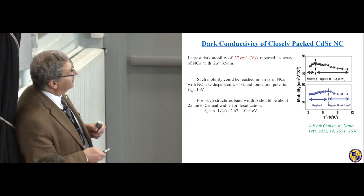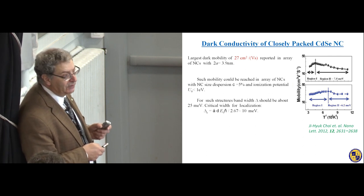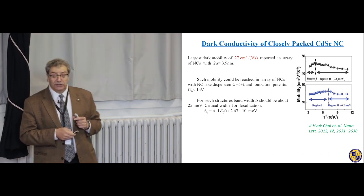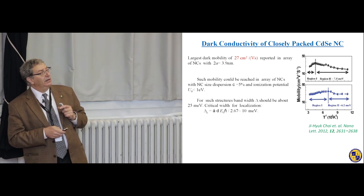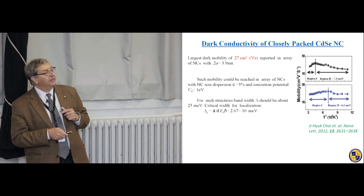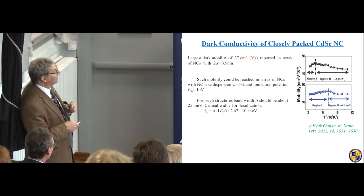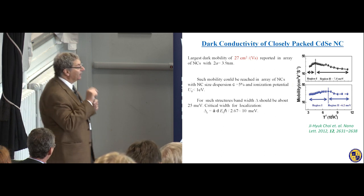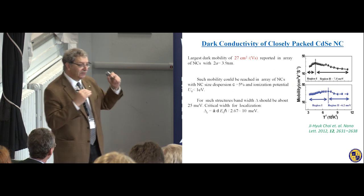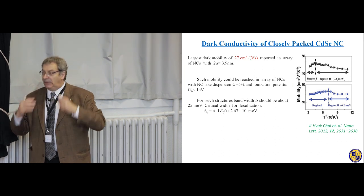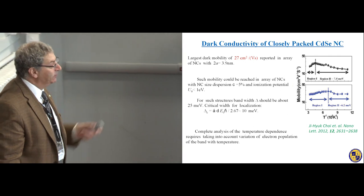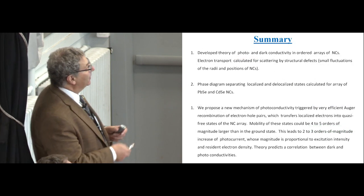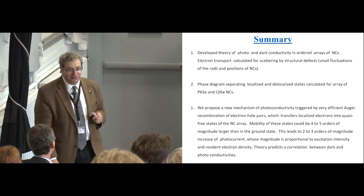Let's discuss briefly the largest dark mobility measured in the Sherry Kogan group. This mobility was reported for a nanocrystal array with diameter 3.9 nanometers. Our calculation shows that indeed such mobility could be reached if you use nanocrystals with 5% dispersion and ionization potential 1 eV. Calculations show that for such a structure, the bandwidth should be above 25 meV, while the critical width for localization of carriers is 10 meV. So there is quite a range of dispersion which allows a well-developed band in this structure. Complete analysis of temperature dependence requires knowledge of the distribution of shallow impurities which provide carriers in this band. I finish with my summary, and I will be happy to answer all your questions. Thank you very much for your attention.